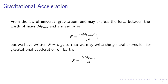Gravitational acceleration. From the law of universal gravitation, we may express the force between the Earth of mass m_Earth and mass m as G m_Earth m over r squared. But we have written F equals mg in the past, so that we may write the general expression for the gravitational acceleration on Earth as g equals G m_Earth over r squared.